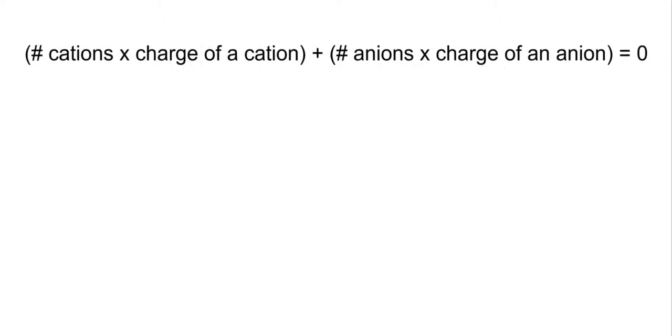This can be represented mathematically by the following equation. The number of cation atoms times the charge of a cation plus the number of anion atoms times the charge of an anion equals zero.